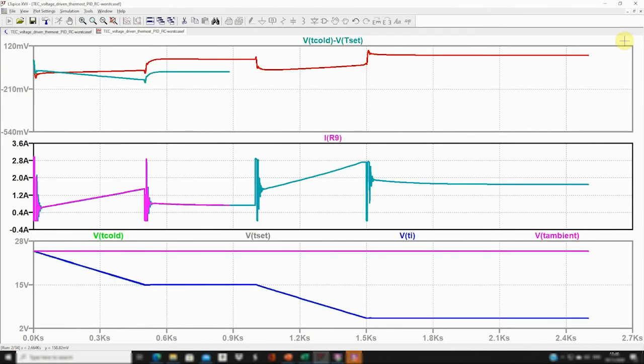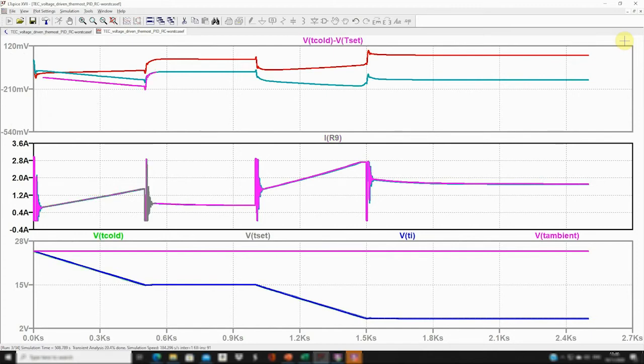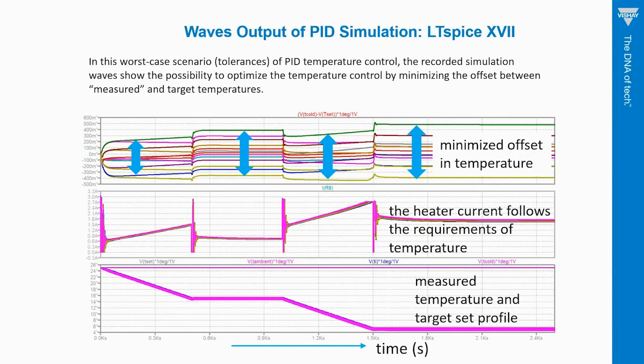This simulation is performed for a worst case analysis. So the multiple curves show the variation corresponding to different component tolerances. When the simulation is over, we can visualize the offset in temperature, and we can thus develop our intuition and understanding of our application.